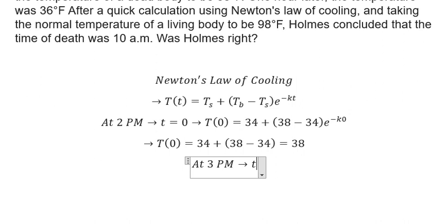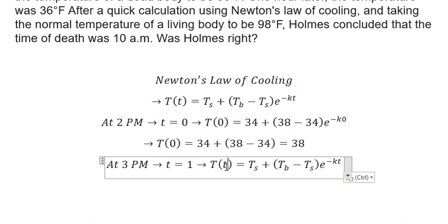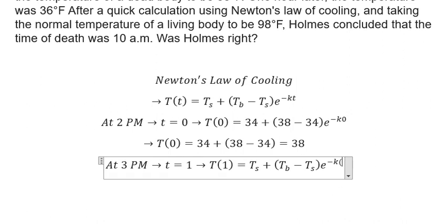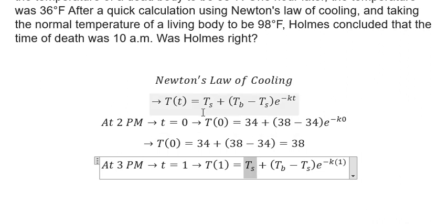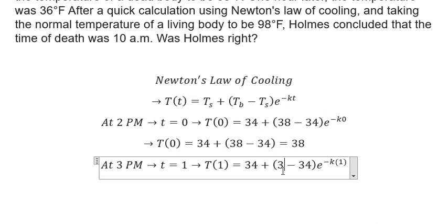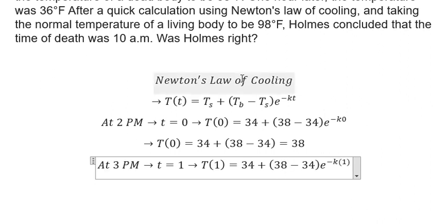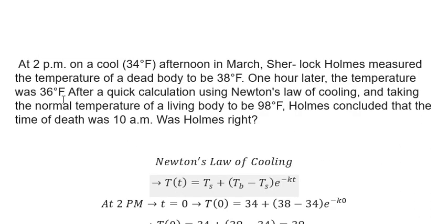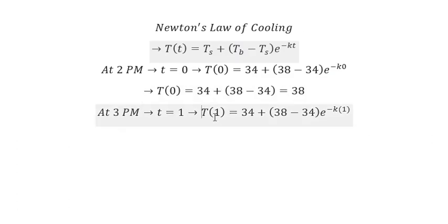After one hour — that means at 3 p.m. — we put T equals one. The surface temperature is 34, the initial body temperature is 38, and after one hour the body temperature is 36. We plug 36 in here.